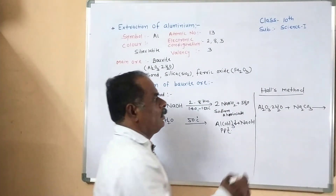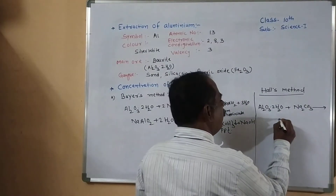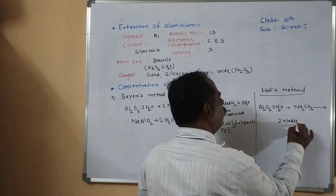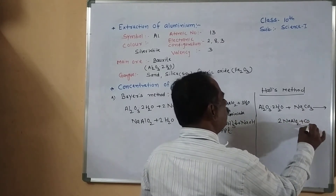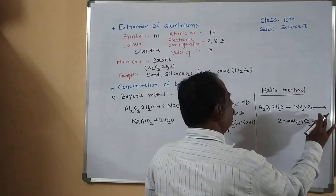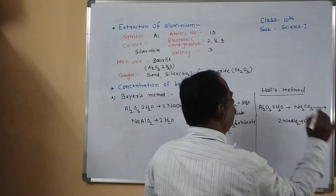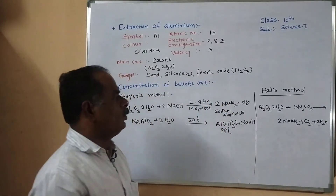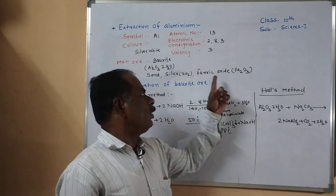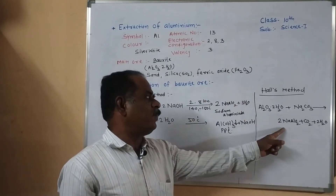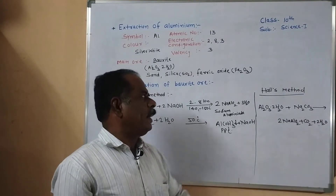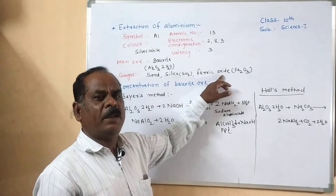In the first step, sodium aluminate NaAlO₂ is formed, CO₂ gas is liberated, and water molecules are formed. Ferric oxide does not react and sodium silicate is also formed. The solution is then filtered to separate the gangue ferric oxide.